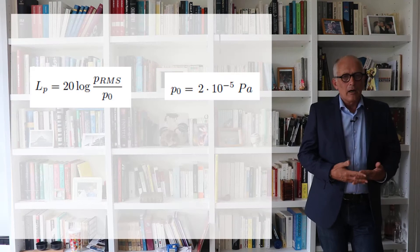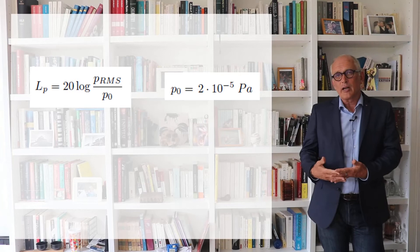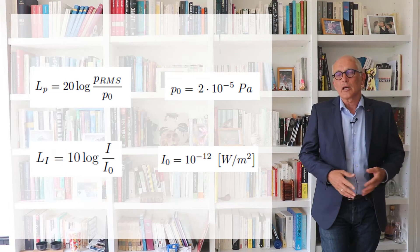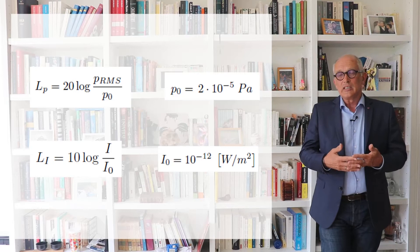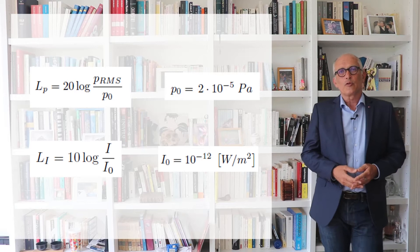If you open any acoustics textbook you are going to find in the very first chapters the definition of sound levels expressed in decibel. You will find two definitions: the sound pressure level, defined as 20 times the logarithm of the RMS value of the pressure divided by a reference value of 2×10⁻⁵ Pascal, and the sound intensity level, defined as 10 times the log of the active intensity divided by a reference value of 10⁻¹² watts per square meter, or 1 picowatt per square meter.